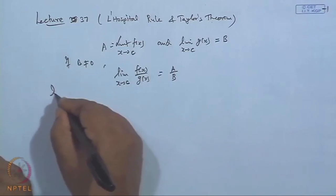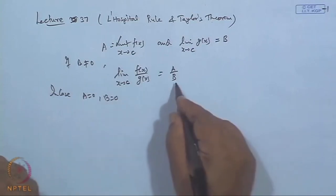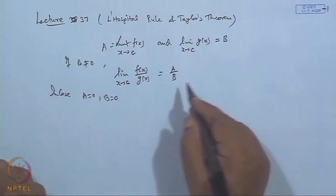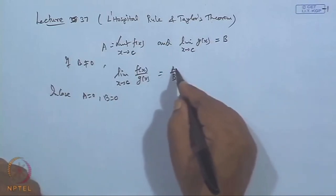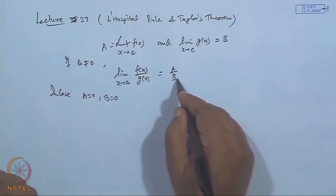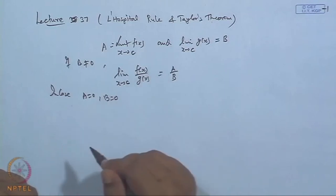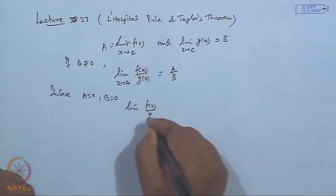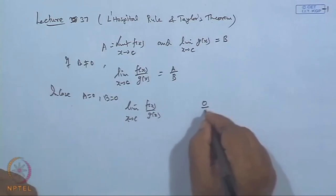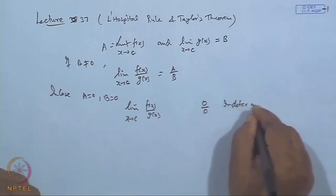But if a is also 0 and b is also 0, or if b is 0 and a is negative, then the limit goes to minus infinity, and if b is 0 and a is positive, then the limit goes to plus infinity. Now, the case when both a and b have limiting value 0: when we consider the limit of f(x)/g(x) as x tends to c, it comes out to be the 0/0 form, which is known as the indeterminate form.